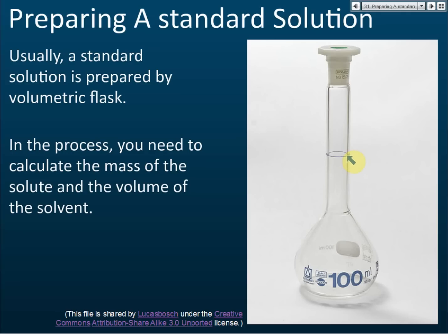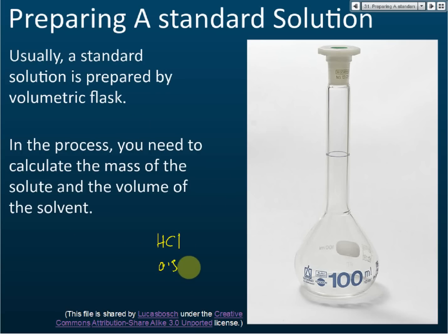We add water drop by drop until the level reaches the mark, then shake it until 100% of the solid dissolves and we have our solution. Now the question is: the volume is no problem since we use a 100 ml flask, but how much solute do you need to add? For example, if you want to prepare hydrochloric acid 0.5 molar in 100 cm³.